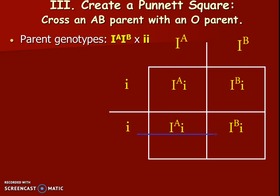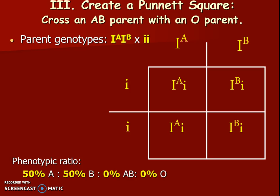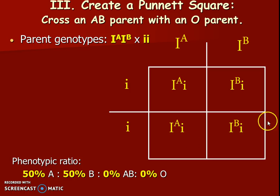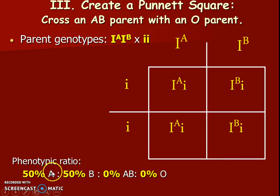Bring the letters down the columns and across the rows as normal. Then we get our genotype and phenotype ratios — the phenotype ratio is most important. We get 50% blood type A and 50% blood type B. The A results are heterozygous — they have a hidden little i. There are no AB or O offspring. It's very important to label what you're discussing: 50% A, 50% B, 0% AB. We don't do genotype ratios here — it gets too long and complicated. We'll practice this a lot in class. Good job, guys.